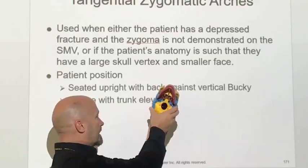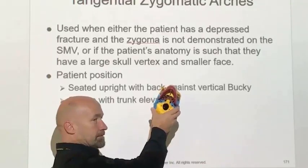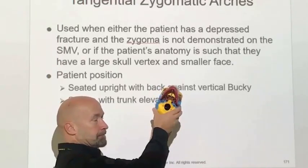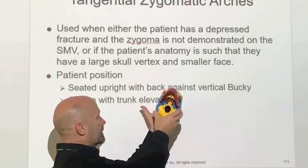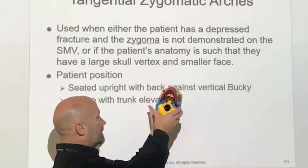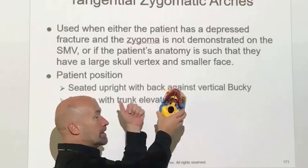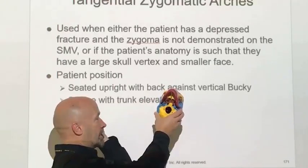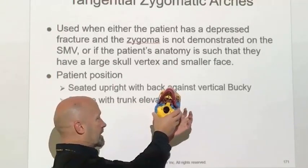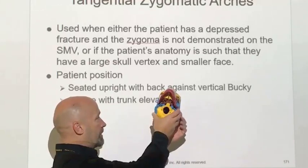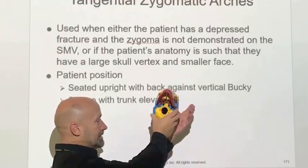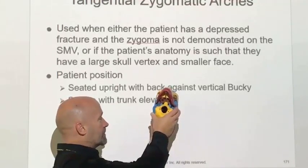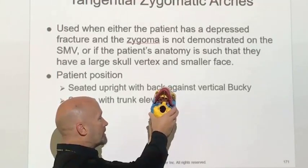You can't see the zygomatic arches when positioned like the SMV. What the textbook says to do is rotate the head 15 degrees toward the side of interest, then take the vertex of the skull and rotate it away from the side of interest — so you're essentially tilting the anatomy of interest toward the image receptor.